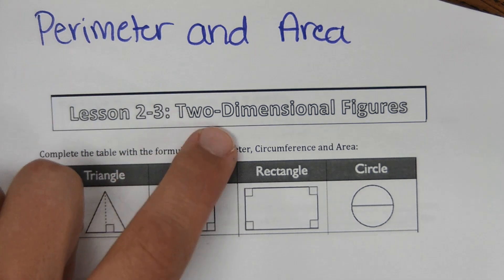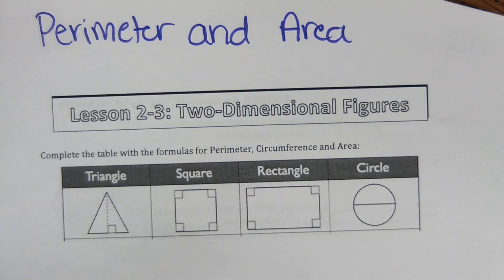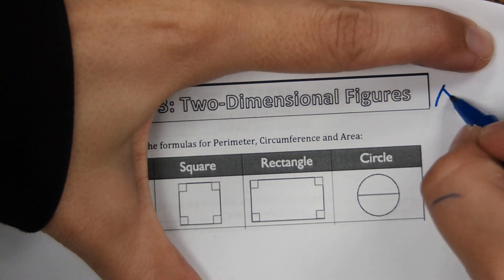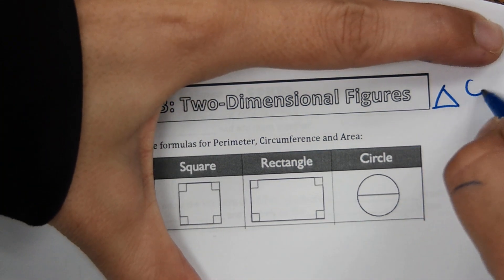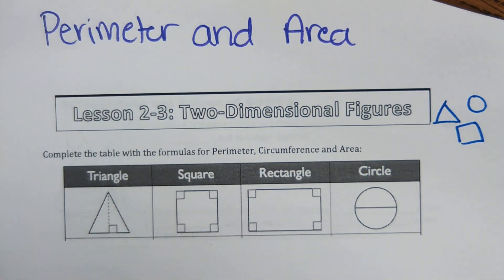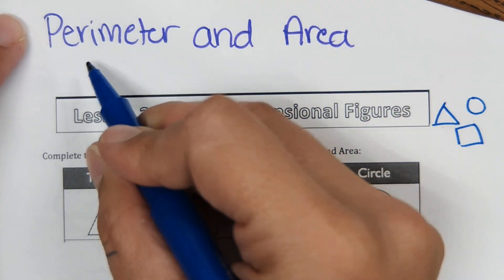This lesson is on two-dimensional figures — flat shapes. Three-dimensional figures would be like a cylinder or rectangular prism. But two-dimensional figures are just triangles, circles, squares, flat shapes. We're specifically working with perimeter and area.